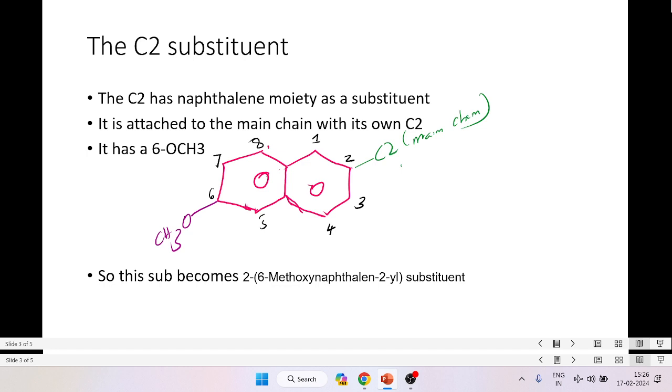So this substituent becomes 2-(6-methoxynaphthalen-2-yl). Now the 2-yl means it is attached to the main chain with its carbon C2 substituent.